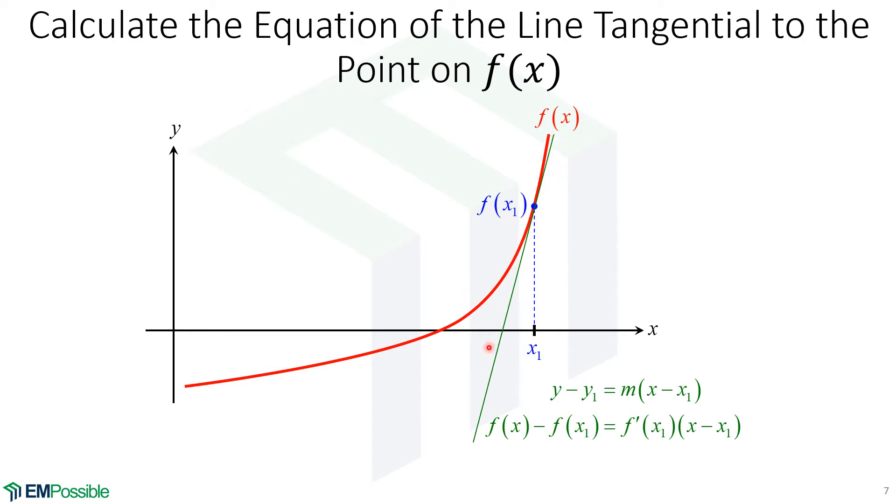Essentially we can extrapolate that down and figure out where that line crosses the x-axis, and that's going to become our guess at the next root. Let's dig into how we do that. We start with the equation of a line, so we have its slope, which will be the derivative of the function at x1.